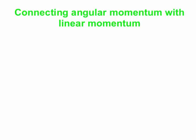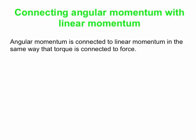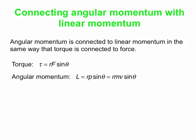Now let's connect angular momentum and linear momentum. We'll review torque a bit here, because angular momentum is connected to linear momentum in exactly the same way that torque is connected to force. The magnitude of torque is given by a distance times the force times the sine of the angle between the line you measure distance along and the line of the force, where distance is measured from the axis of rotation to where the force is applied. We can have a similar equation for angular momentum.